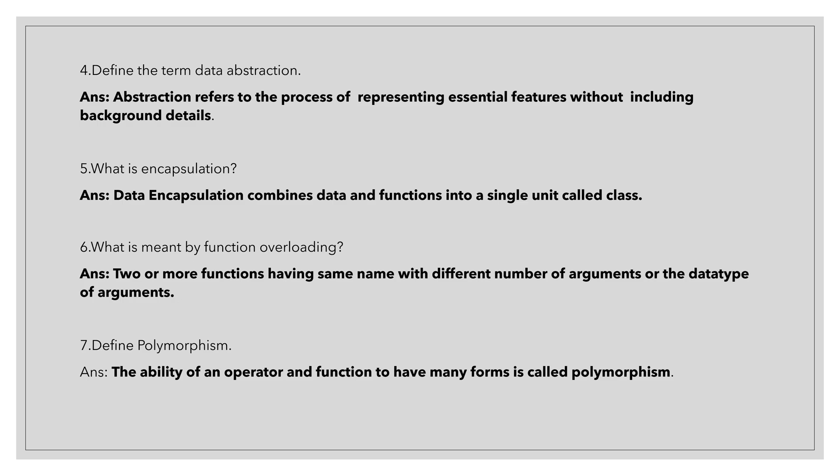Seventh question is, define polymorphism. Ability of an operator and function to have many forms is called as polymorphism. Or you can write, taking many forms. Ability of taking many forms is called as polymorphism. You can write in both ways.